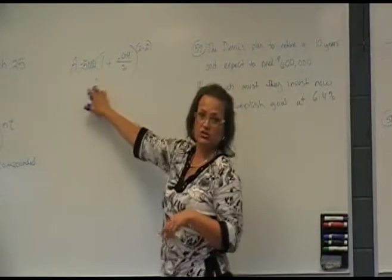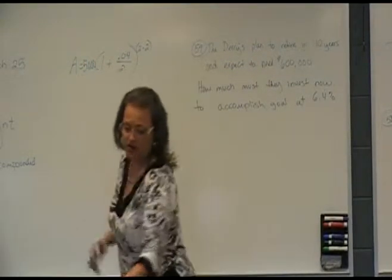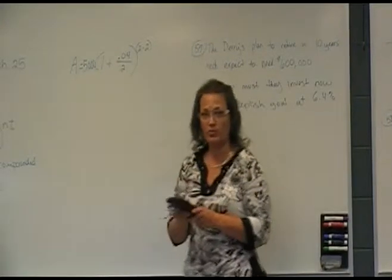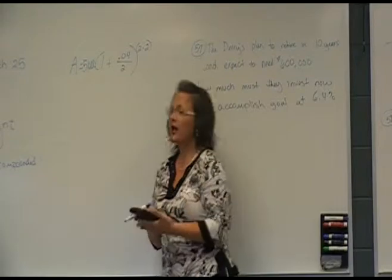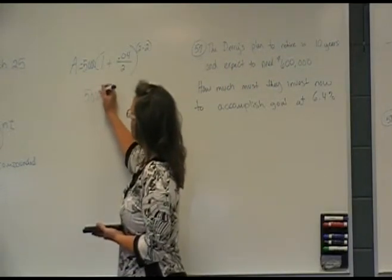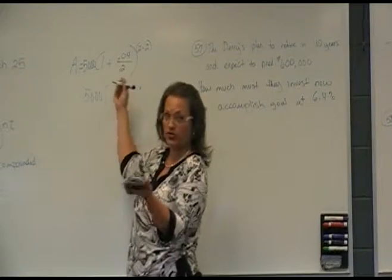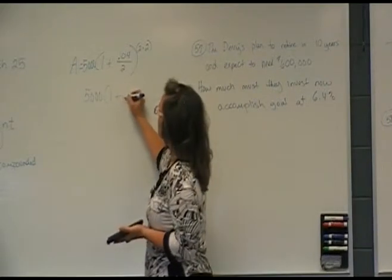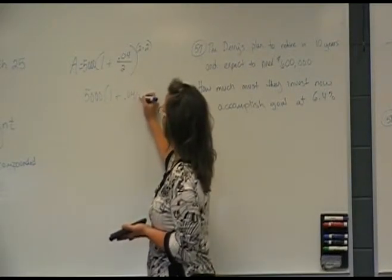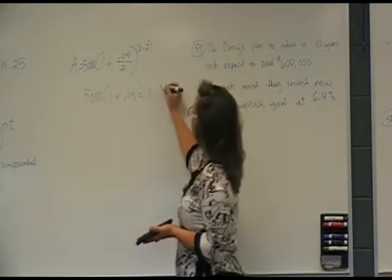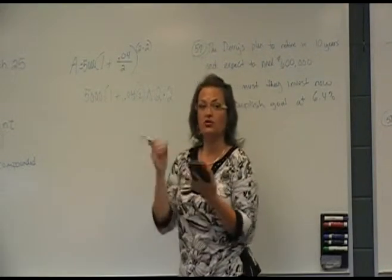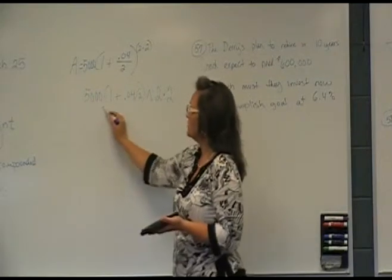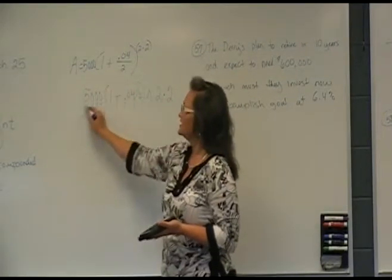This is the values we need to punch in our calculator. Now, your calculator does know order of operations, so punched in correctly, your calculator can handle this. But here's what happens sometimes. Students type in 5,000. They usually type in the parentheses, okay? 1 plus .04 divided by 2 raised to the second power times 2. If you type it in like that, your calculator is going to do all of this work, raise that to the second power, and then double that answer, which isn't what we're looking for.